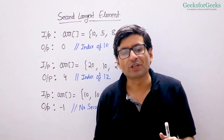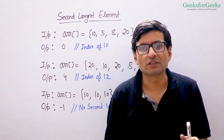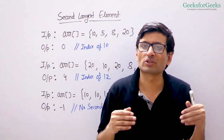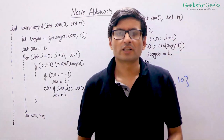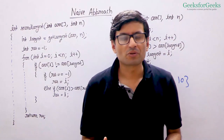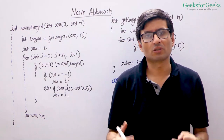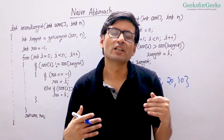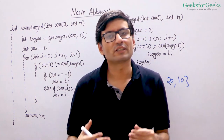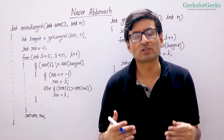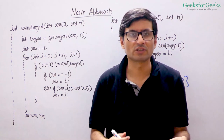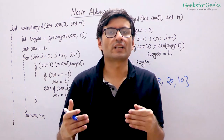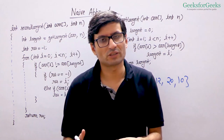Now please pause this video and try to write a function that takes an array as an argument and returns the index of the second largest element. Let us first talk about a naive solution. Note that it is still a linear time complexity solution — it just does two traversals of the array. Later we will talk about a solution which finds the second largest in one traversal.